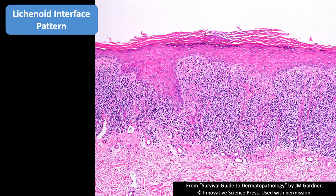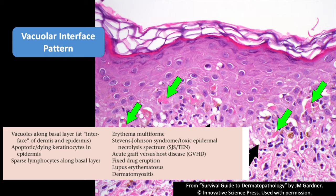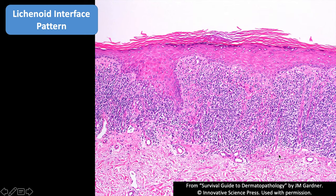Here's an example of lichenoid interface dermatitis. I think of vacuolar and lichenoid as just two ends of the same spectrum. Both have vacuoles, lymphocytes at the basal layer, and dying keratinocytes. The difference is that vacuolar has relatively sparse lymphocytes, while lichenoid has a massive band of lymphocytes forming a thick band right underneath the epidermis.